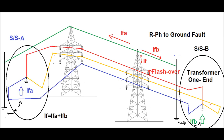How the earth wire provides a return path for any phase-to-ground fault has been shown in this diagram. Here two substations — substation A located at one end and substation B located at another end — are shown. If any fault occurs, the fault current is divided into two paths: IFA towards substation A and IFB towards substation B. IFA will be transmitted via earth wire to the ground of substation A and return via the neutral of the transformer and via the R-phase. Therefore, IF equals IFA plus IFB.